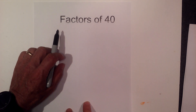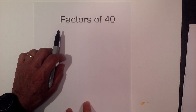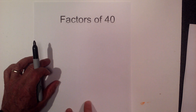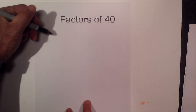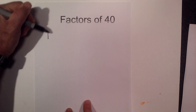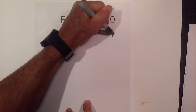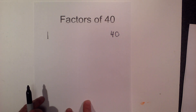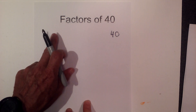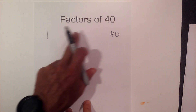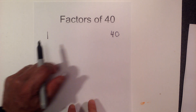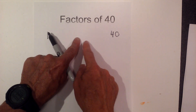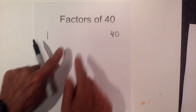I'm going to find the prime factorization and multiples of 40. Here's how I like to find the factors: 1 times 40 equals 40, and then I find all the numbers that multiply together — it's like a little curtain that closes until I can't find any more numbers.